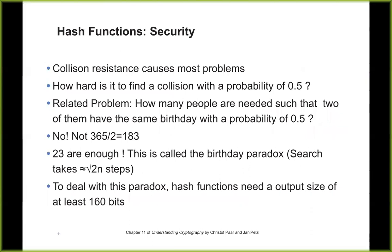Strong collision resistance is connected to the birthday paradox. If you hash a lot of files and try to find any match, that's like the birthday problem — in a room of 20-30 people you'll often find two sharing a birthday. If you want someone with a specific birthday (like January 1st), you'd need about 183 people for a 50% chance. But to find any two people sharing any birthday, you only need about 23 people, because the number of pairs is 23×22÷2.